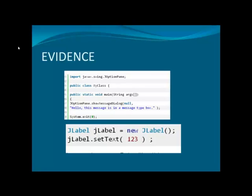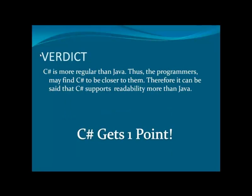Having an idea of the previous evidence stated for C-Sharp, this particular coding set portrays a little bit more complexity, and the words employed are far lengthier than those portrayed in C-Sharp. Finally, it's a verdict: C-Sharp is more regular than Java, thus programmers may find C-Sharp to be closer to them. Therefore, it can be said that C-Sharp supports readability more than Java.